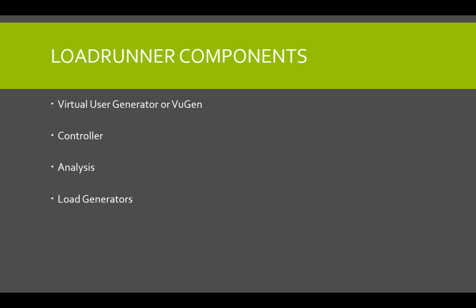The first component is called the Virtual User Generator, or VUGen. This component captures the end user business process and creates an automated performance testing script, also known as the user script. So when we talk about a VUser script, it is the end user business process that the Virtual User Generator captures.